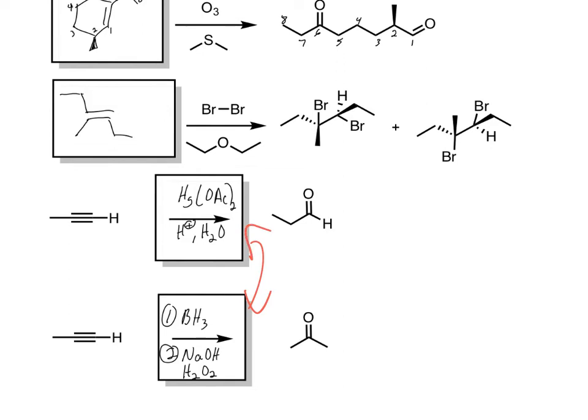If you want to take an alkyne and make an aldehyde, you need this up here. If you want to take a terminal alkyne and make a ketone, you need the mercury one. So my fault, I switched those around. My apologies.